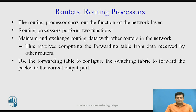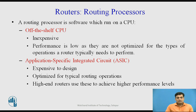The routing processor carries out the functions of the network layer and performs two major functions. First, it maintains and exchanges the routing or forwarding table with other routers in the network, which involves computing the forwarding table from data received from other routers. Second, it uses the forwarding table to configure the switching fabric to forward the packet to the correct output port or output buffer. The routing processor is software that runs on the CPU of the router.